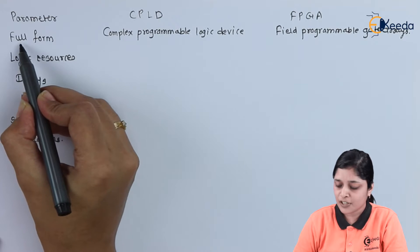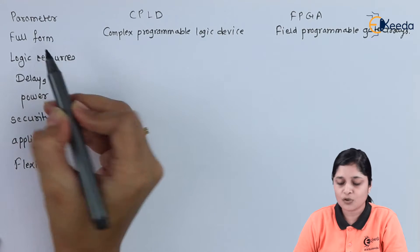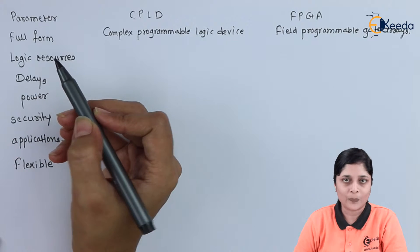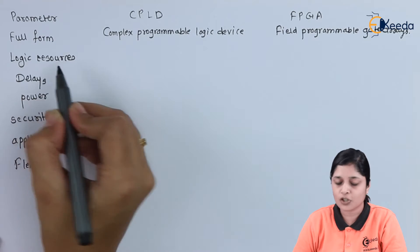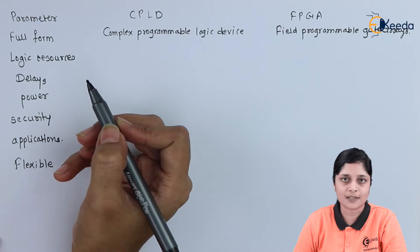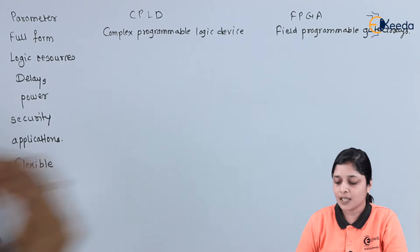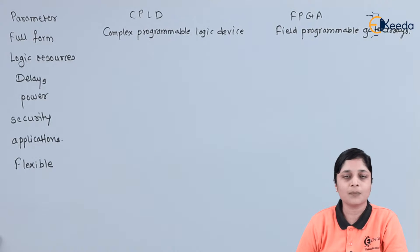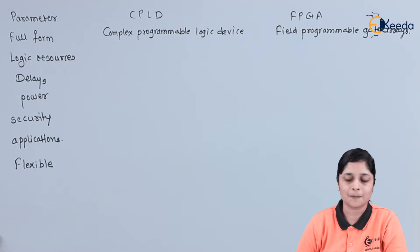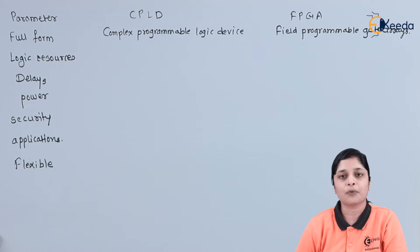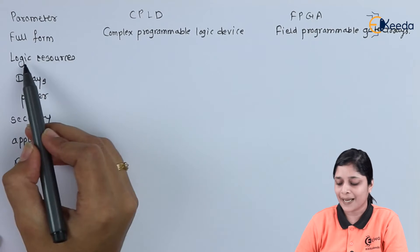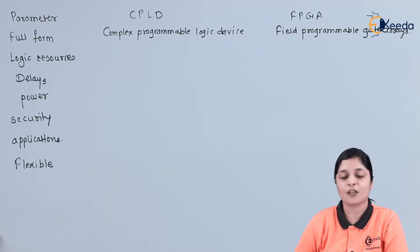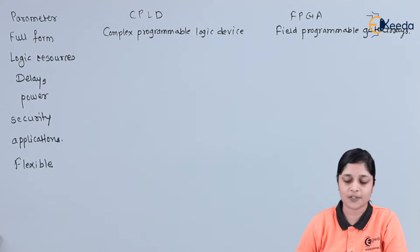The first parameter is the full form. The next parameter is logic resources. CPLD provides us a minimum number of logic resources to design the circuit, and FPGA provides us maximum logic resources to design digital circuits.